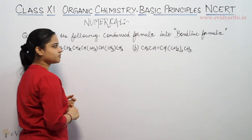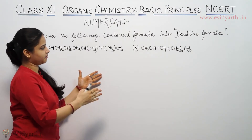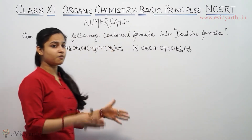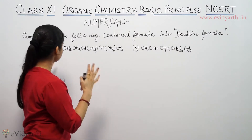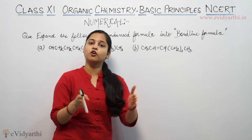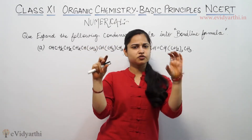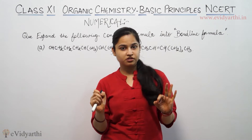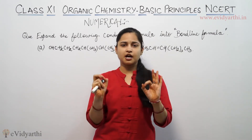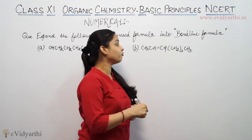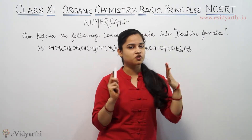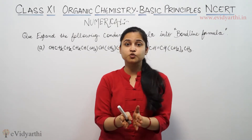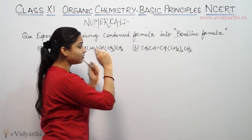The question is to expand the condensed formula into bond-line formula. The condensed formula is the formula in which each and every bond disappears, making the organic compound in a condensed form. The bond-line formula is the formula in which carbon and hydrogen atoms disappear, and the carbon-carbon bonds are represented as a zigzag line. In the bond-line formula, functional groups and substituents present are not removed. Let's begin keeping all these concepts in mind.